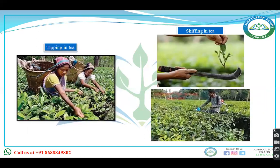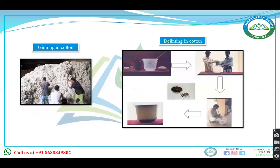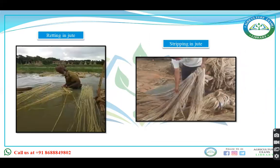Tipping in tea is a normal process; it simply means plucking of the leaves. Deblossoming is done in potato. Getting is done in cotton. These are the various terminologies you have to remember that are associated with various crops.